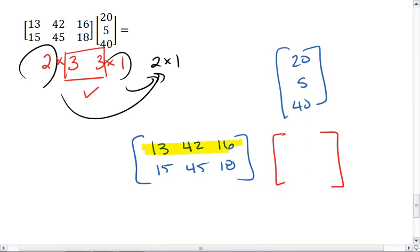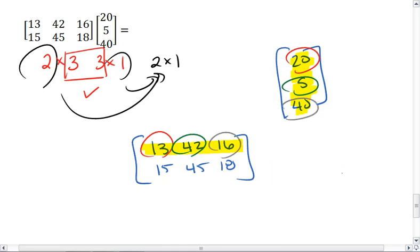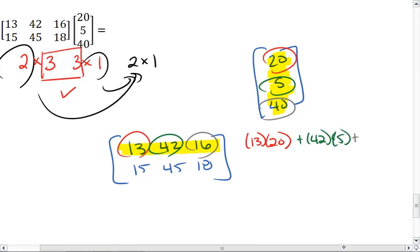For the first element of our new matrix, we want to take the entire first row, multiply through the first column, matching element to element. So we get 13 times 20, plus 42 times 5, plus 16 times 40.